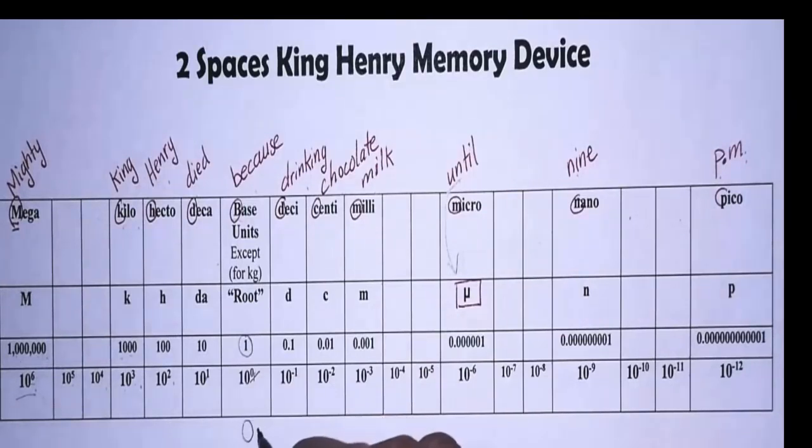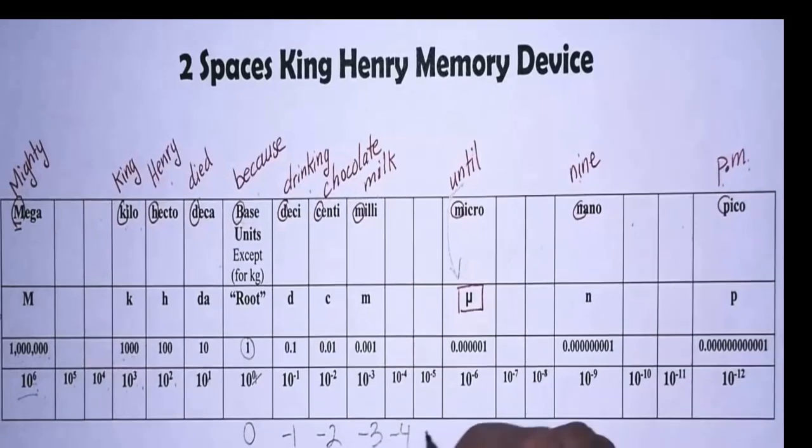So I know that base is equal to zero. So all I have to do is count this way or that way. If I'm going to pico, of course I'm getting smaller, so therefore it's going to be minus. So what's after zero? It's going to be minus one, after minus one, minus two, minus three, minus four, minus five, minus six.